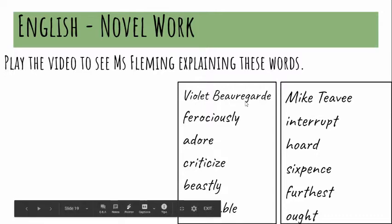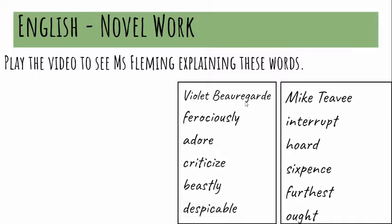The first one here is Violet Beauregard — she's going to be the third character that we are introduced to. We were introduced to two new main characters last time, and their parents as well, but this is the third child now that we're going to be introduced to. The next word is 'ferociously' — if someone is doing something and they're quite fierce, quite determined, you could say they're doing it ferociously.